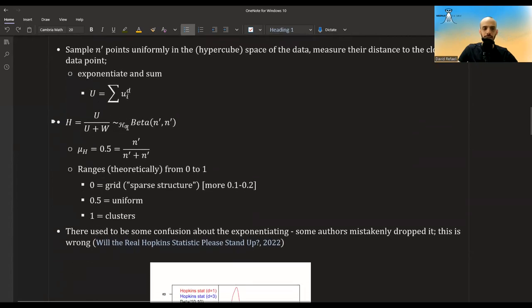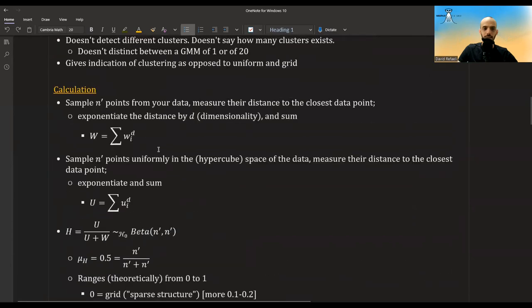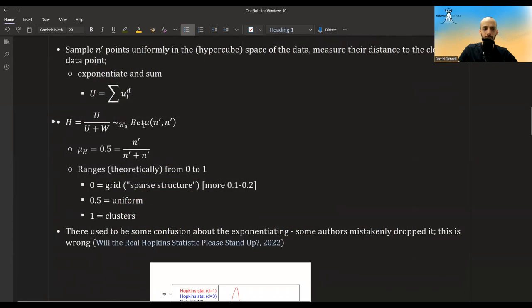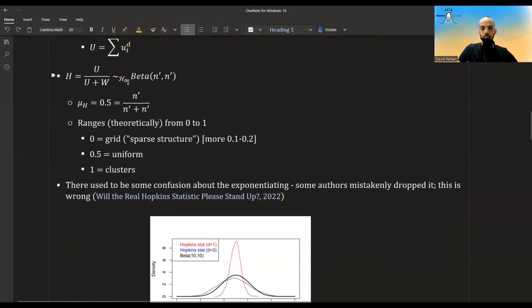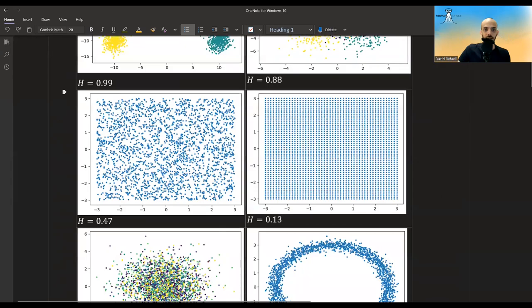And this statistic under the null assumption that the data distributes uniformly has a beta distribution with N' and N'. I will prove this at the end of this video. So if it has a beta distribution of N' and N', the mean that you expect to have is 0.5. And this is what you will have if the null assumption is correct. So if your data is coming from a uniform distribution, you will get something that is close to 0.5, as we indeed saw here.